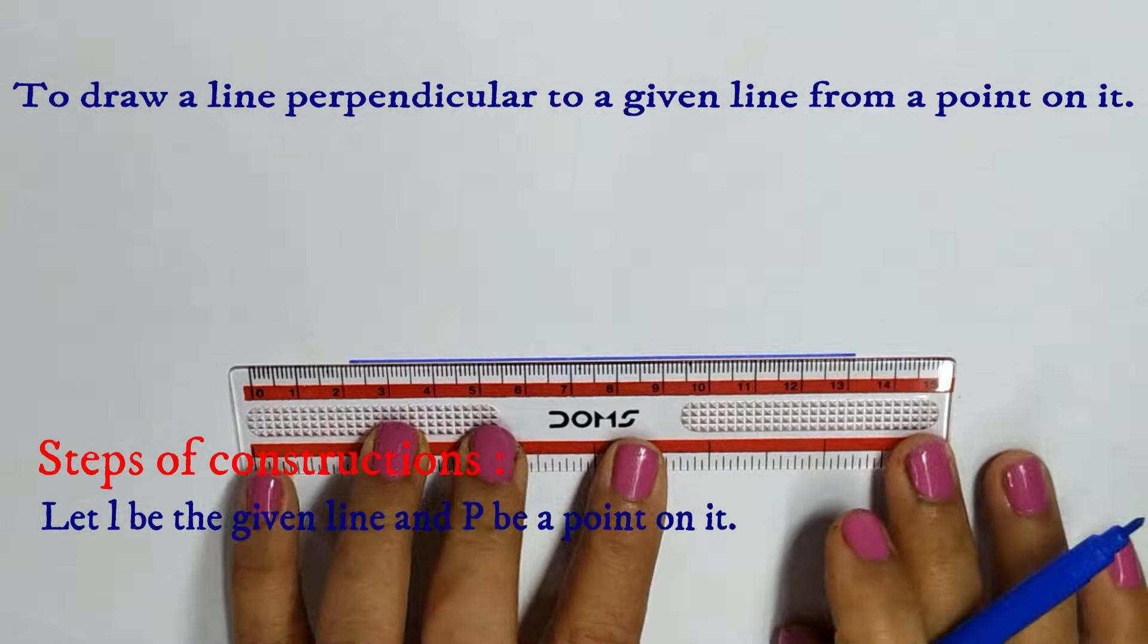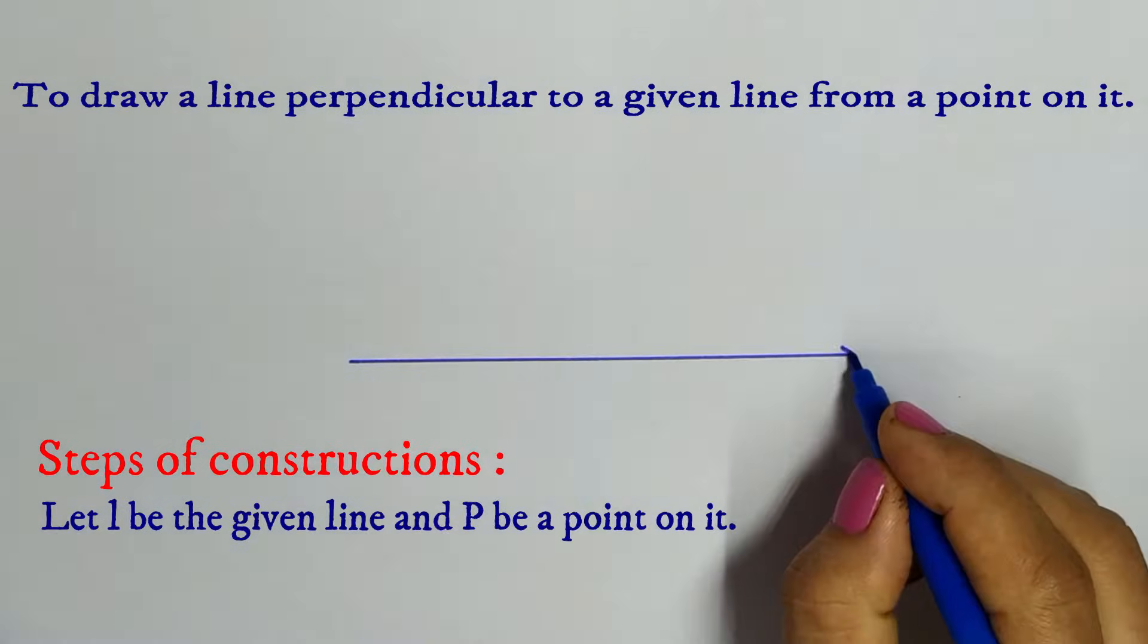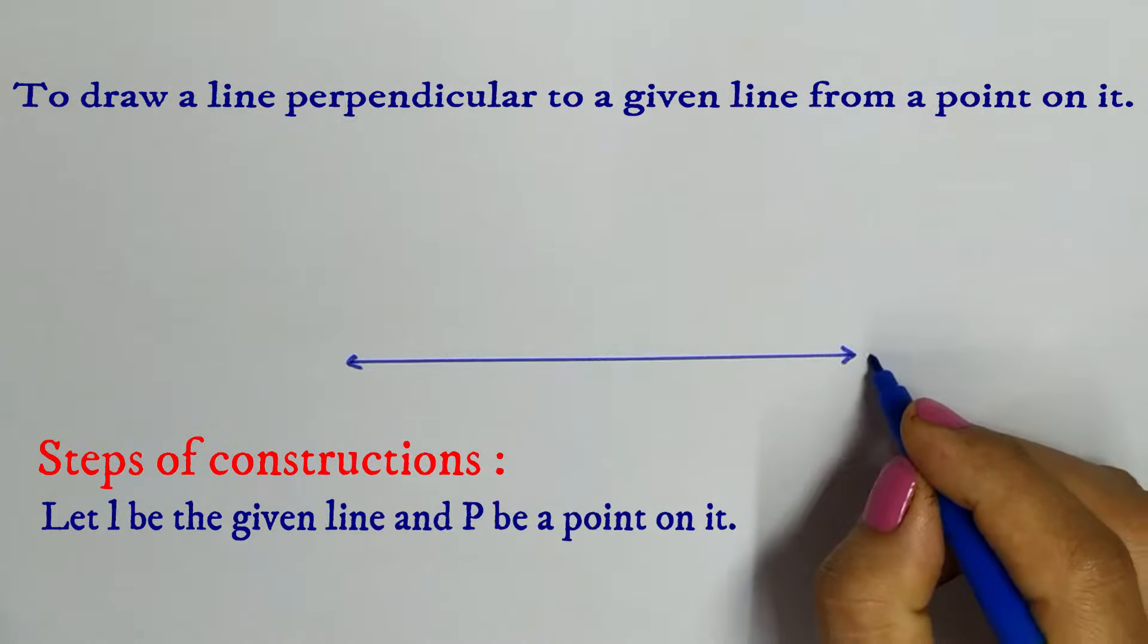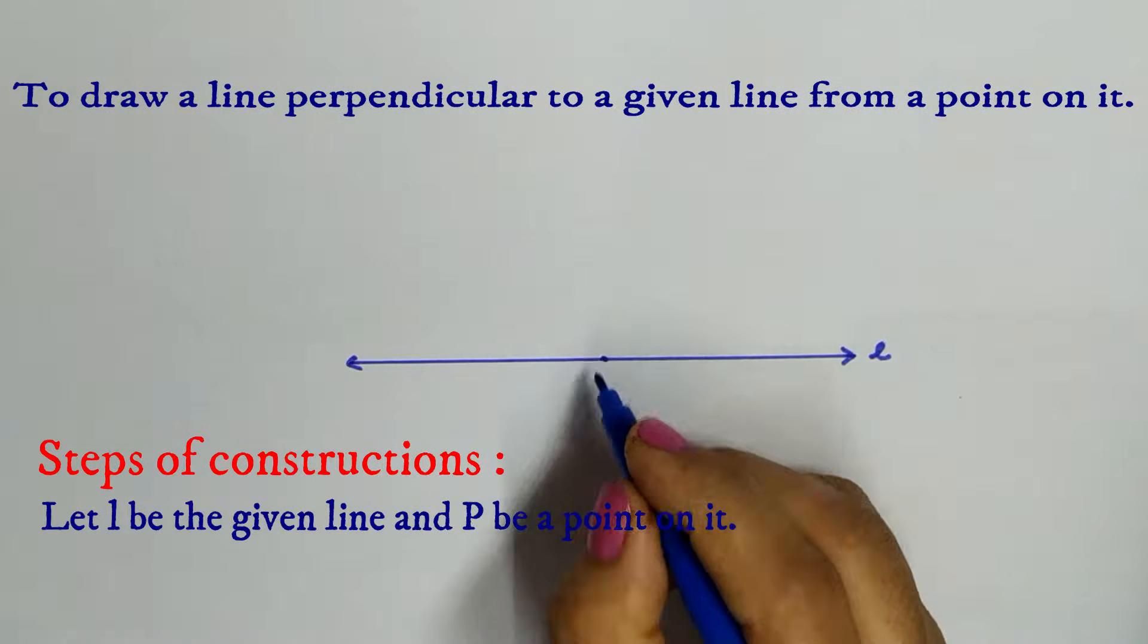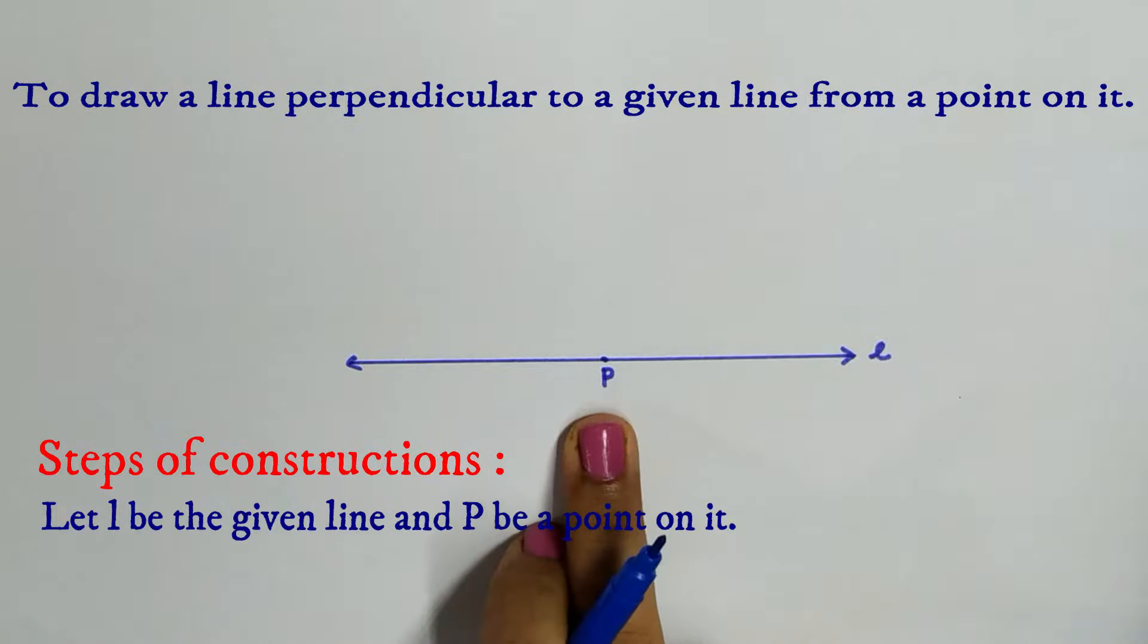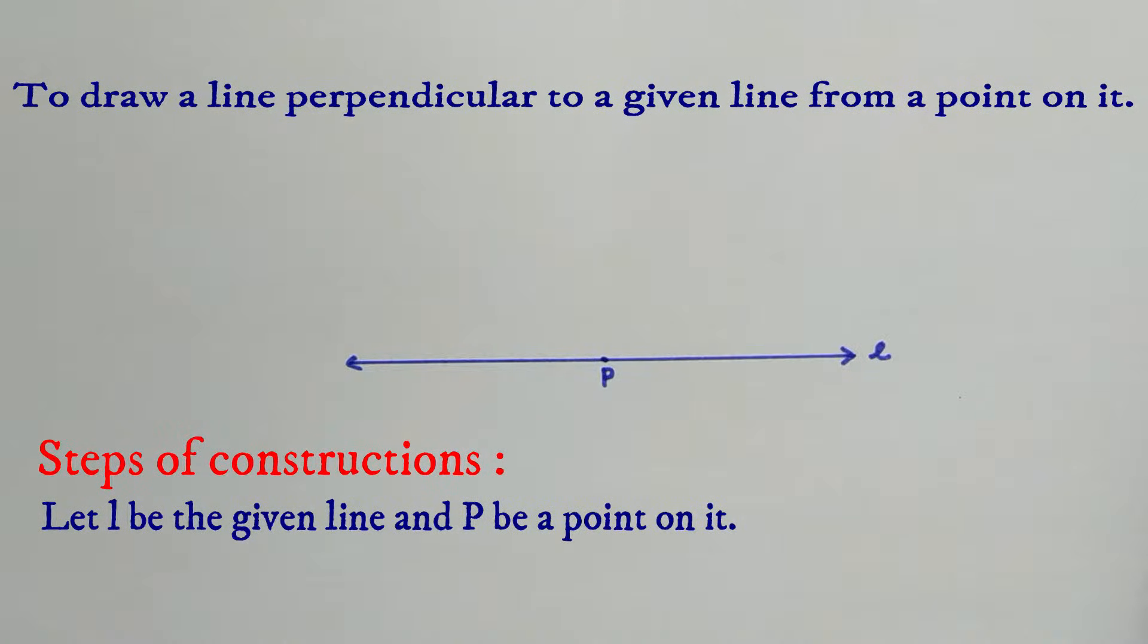Let us draw a line. Let it be L and a point P on it. We have to draw a perpendicular from this point on line L.